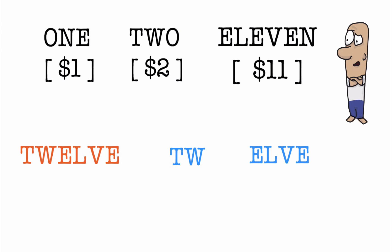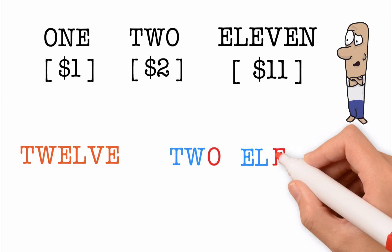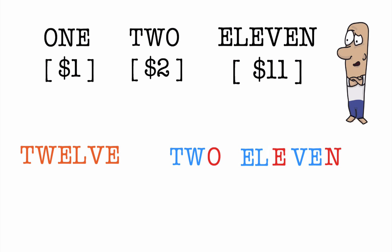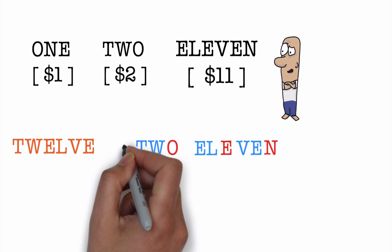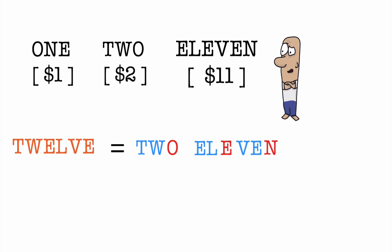I am going to split TWELVE into two parts like so. Now this looks very much like TWO and ELEVEN. Let us add the missing parts. Great. As you can see, we have added the letters O, E, and N. Now we can say that the letters in TWELVE are equal to the letters in TWO plus the letters in ELEVEN minus the letters O, E, and N.